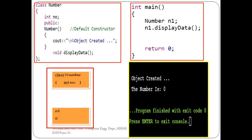To verify that constructors are getting called — since we are not giving an explicit call — we can write a simple print statement such as 'object created', so that we can see as output that the object is being created. As you can see, in the default constructor for class 'Number', a simple 'cout' statement is written, and whenever the object is created, a call is given to this constructor and the message is displayed.